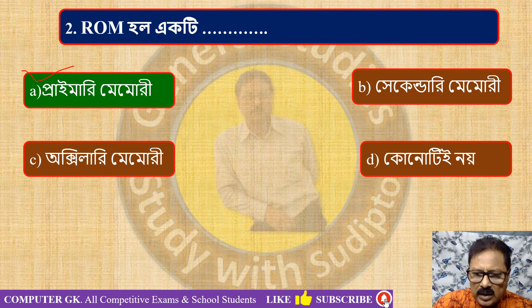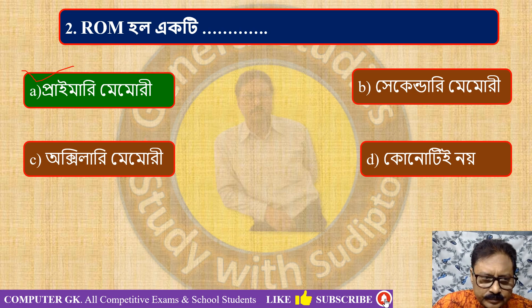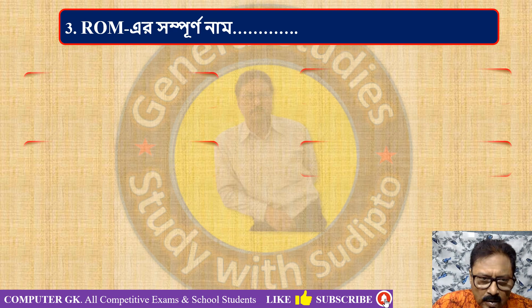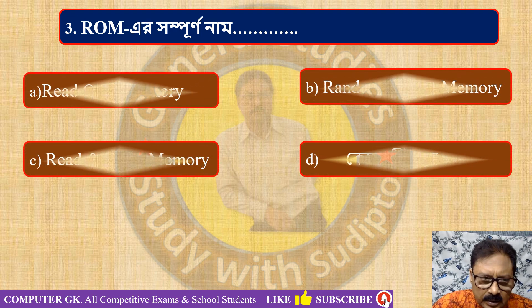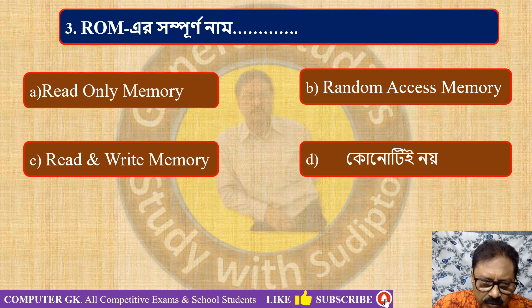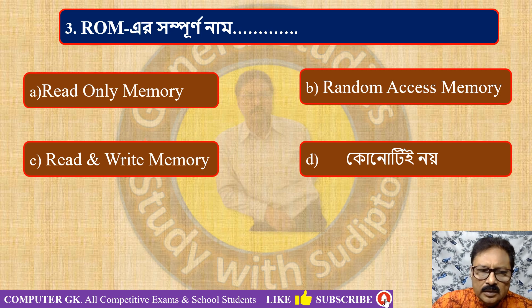Secondary memory is a separate category. ROM stands for Read Only Memory, RAM stands for Random Access Memory, and RAM is also called Read and Write Memory. ROM is a primary memory.